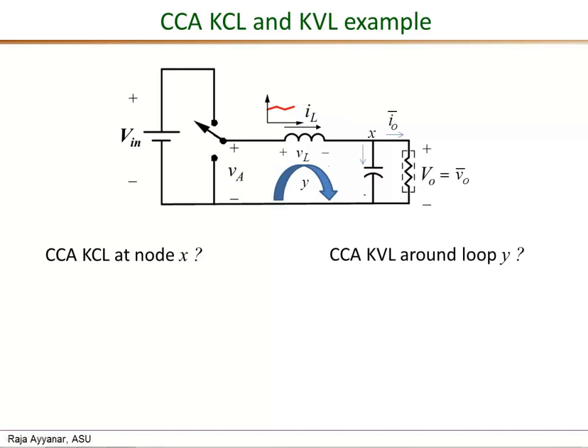Next, let's do an example of applying KCL and KVL in a CCA sense in an actual power converter. So once again, this is the basic step down converter that we have seen. Let's say we want to apply KCL in an average sense in this node X. The current entering the node is this IL, but we want to write the CCA value, so it would be IL bar. They all can be functions of time.